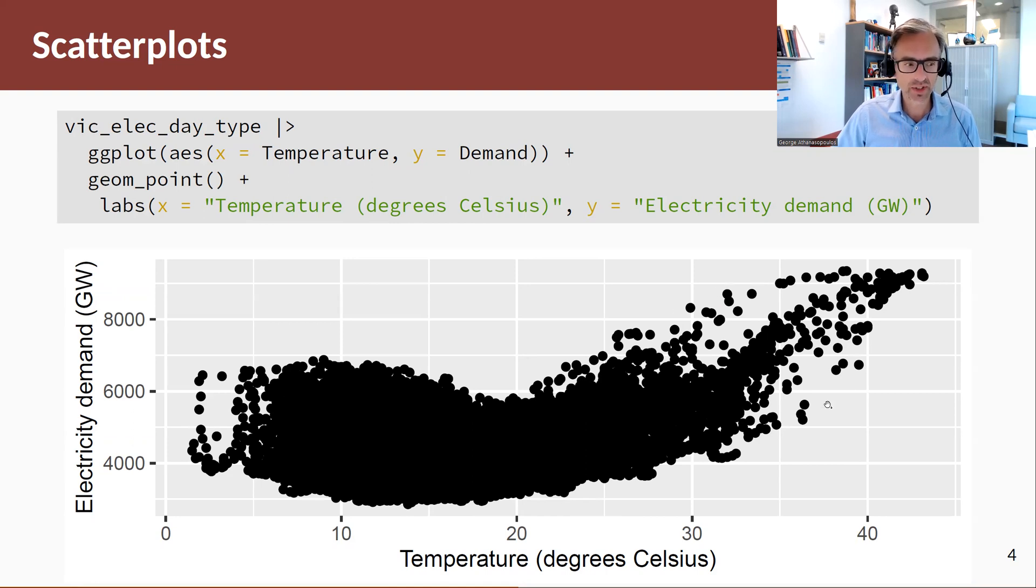There's an increase in electricity demand as the temperature increases, so there's an upward trend here or a positive relationship, and there's also an effect of the cold demands where demand increases due to heating. So on this right hand side we have the air conditioning going on, on the left hand side where the temperatures are low we have heating.